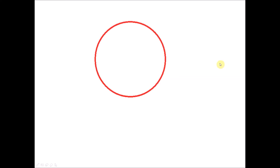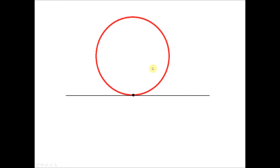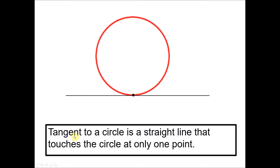So what actually is a tangent? We look at an example here — we have a circle. If you imagine the circle being a ring or a round object and we place it on the floor, we will see that the ring object or the circle only touches the floor at one point. In a two-dimensional way, if we let this straight line represent the floor, we find that the straight line touches the circle at only one point. When this happens, this straight line is called a tangent — a tangent to a circle is a straight line that touches the circle at only one point. No matter how we extend the line, it only touches the circle at one point.